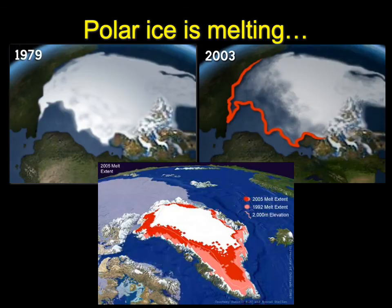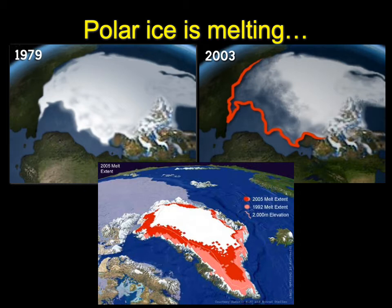What are the consequences of glaciation, and more importantly, of deglaciation or glacial melting during global warming? We know polar ice is melting: comparing 1979 and 2003 images of the North Pole shows significant ice loss, with the 2003 red line showing how far the 1979 extent reached. The Greenland continental glacier lost large amounts of ice between 1992 and 2005, as shown by areas in red and pink.